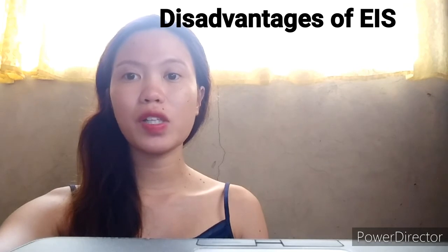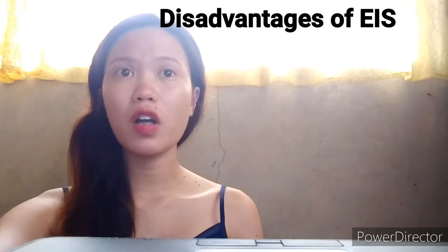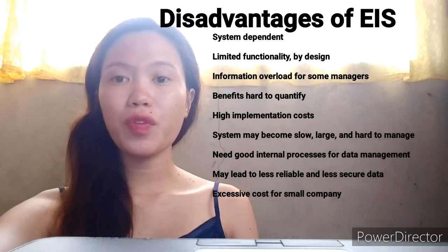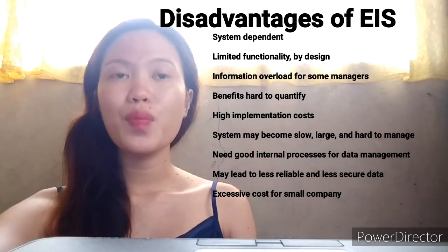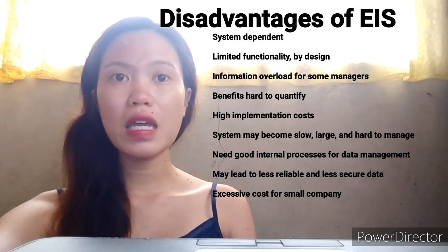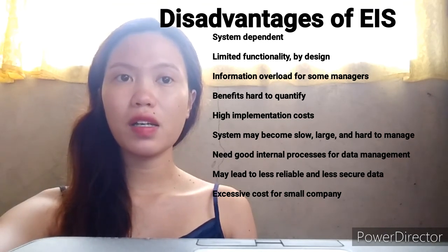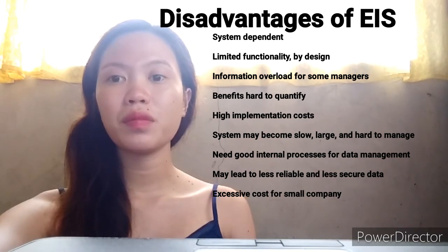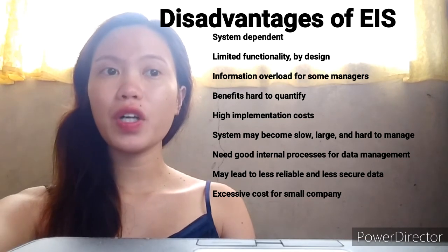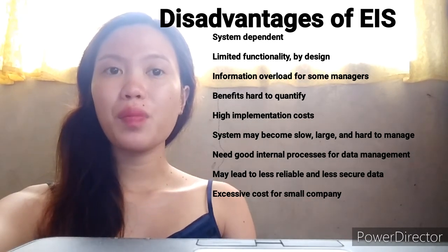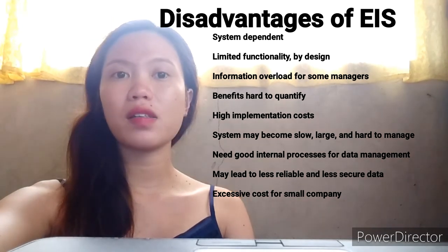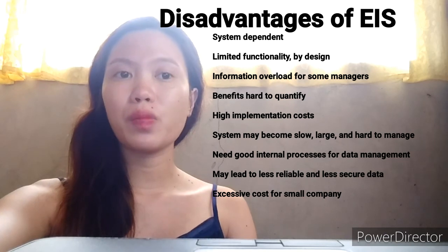The disadvantages of Executive Information System are: system dependent, limited functionality by design, information overload for some managers, benefits hard to quantify, high implementation cost, system may become slow, large, and hard to manage, need for good internal processes for data, may lead to less reliable and less secure data, and excessive cost for small companies.